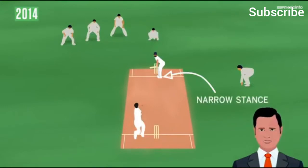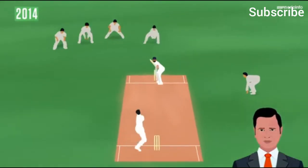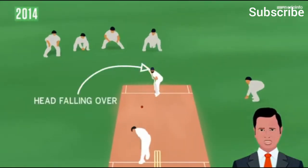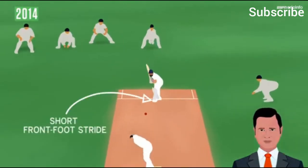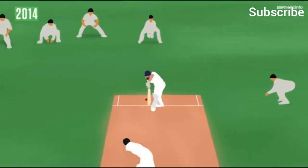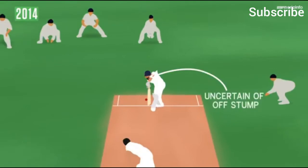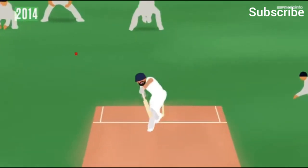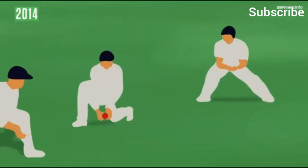In 2014, you see a very narrow stance. The head is falling on the offside, resulting in a short forward and a cross stride. Therefore, the understanding of where the off stump is is slightly blurred.